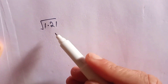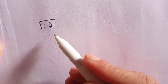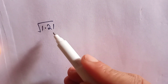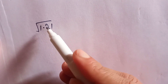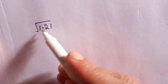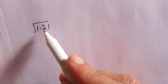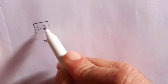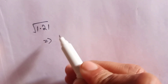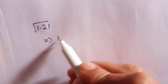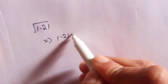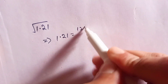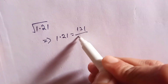Hi everyone, in this video I am going to show how to find the square root of 1.21. It is very easy to find the square root of 1.21 — most students get confused on such questions. We can write 1.21 as 121 over 100.